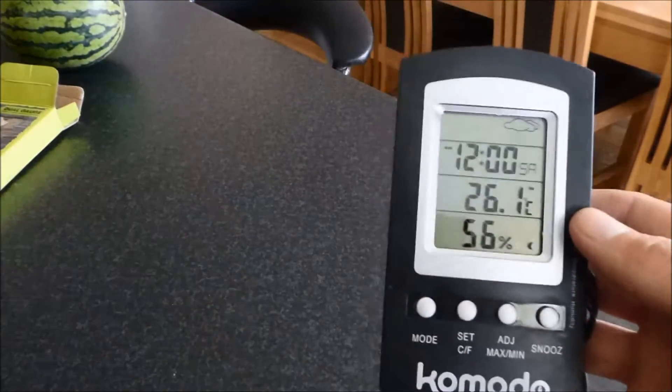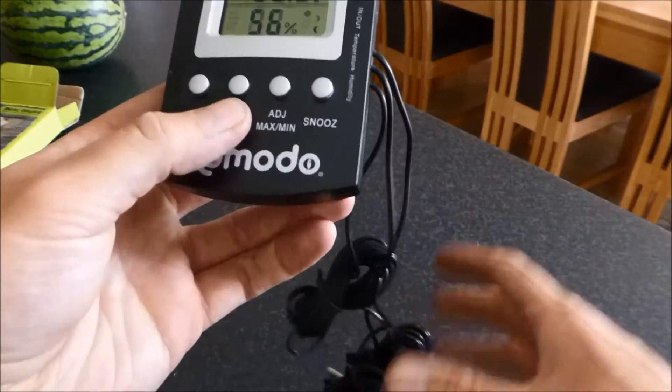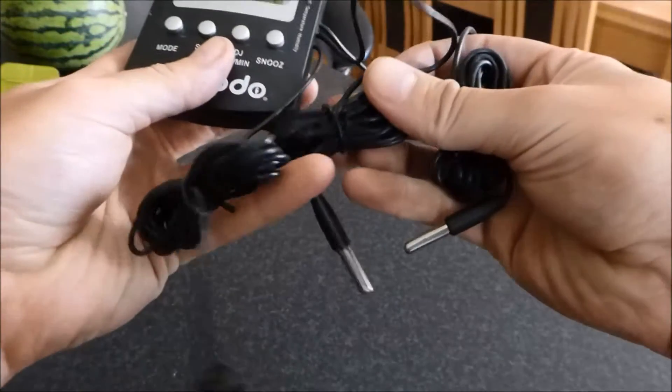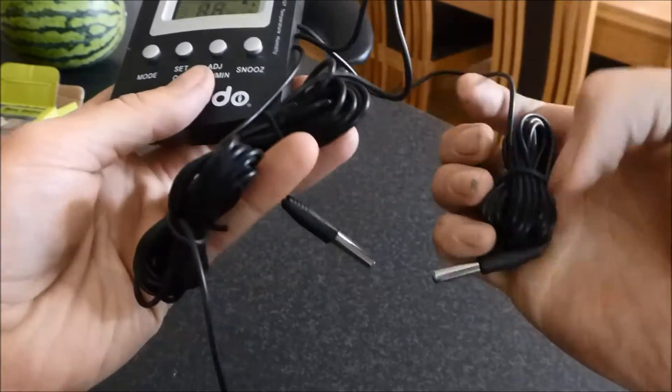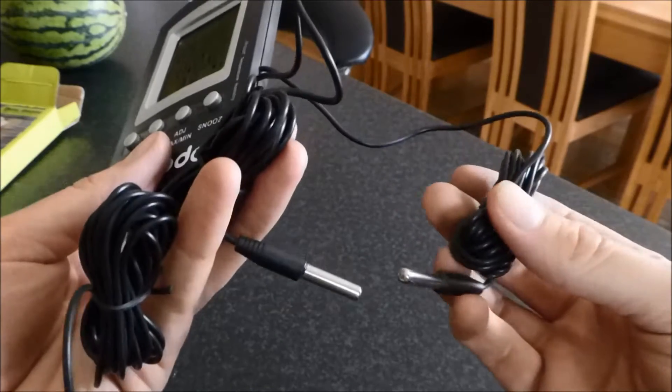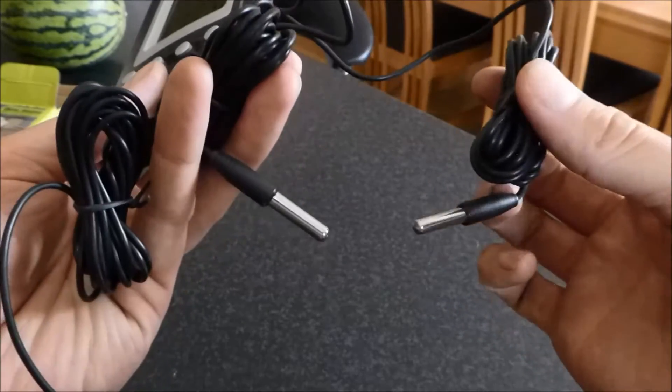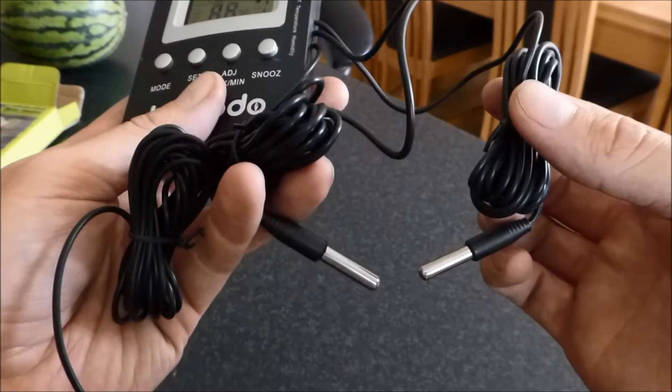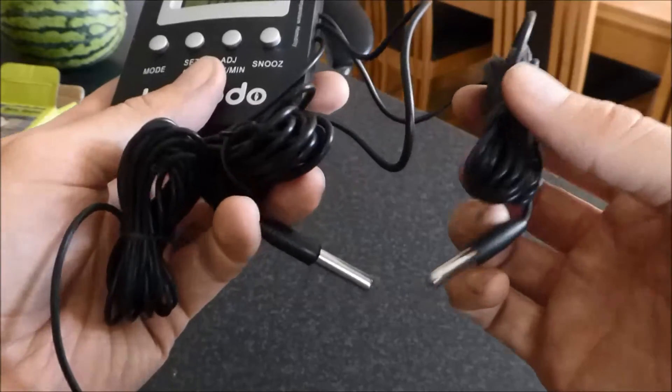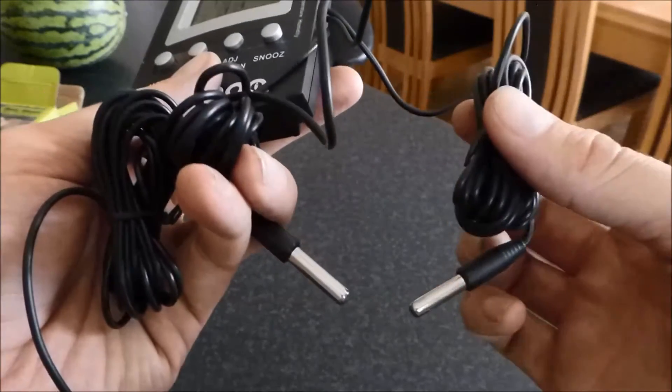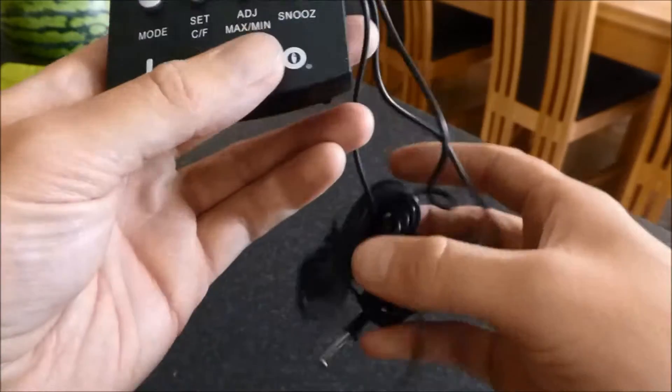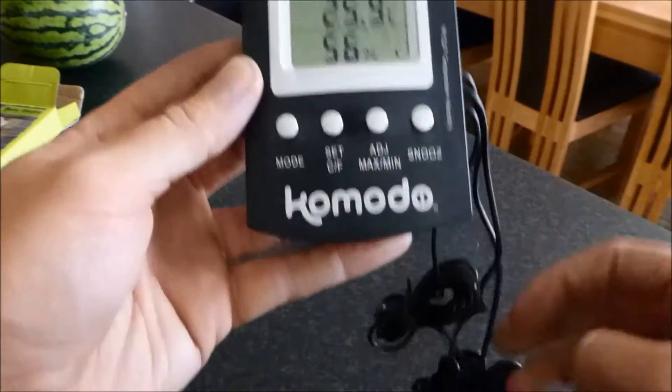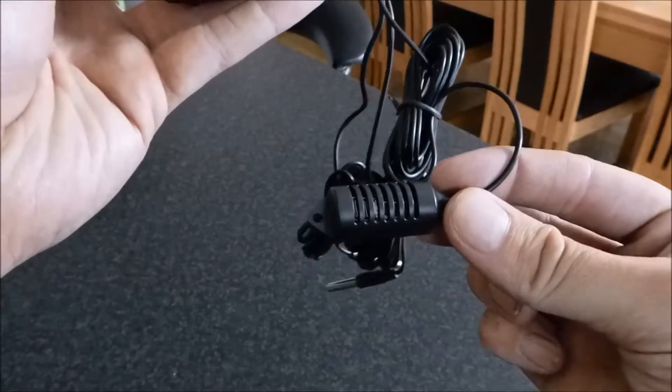So when you open your Komodo Dual Digital Gauge, you'll notice it has two temperature probes. The clusters in and out, I suppose it's just so you can differentiate, but you can actually monitor two zones at once, and that is very handy for people with a larger enclosure. For example, myself, I have a Tegu, and I like to have a hot end and a cool end, as does every Tegu owner, and I also have a humidity sensor.